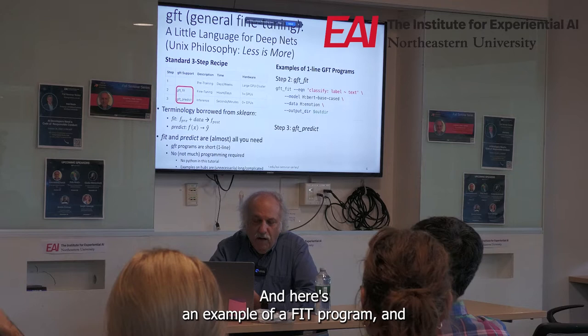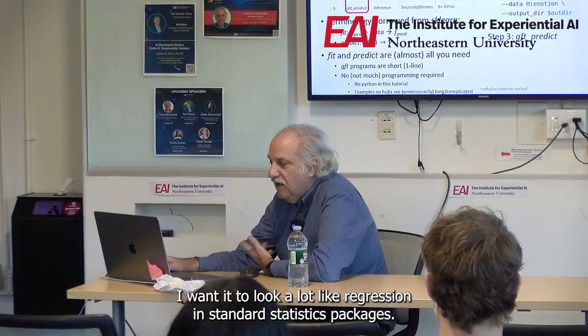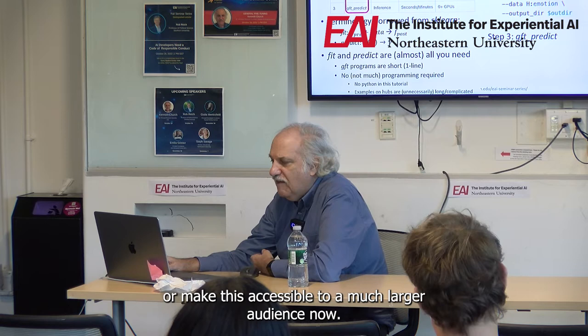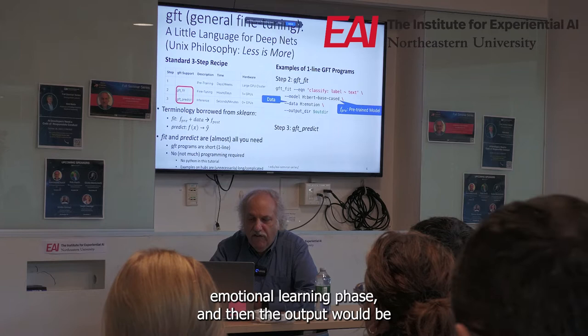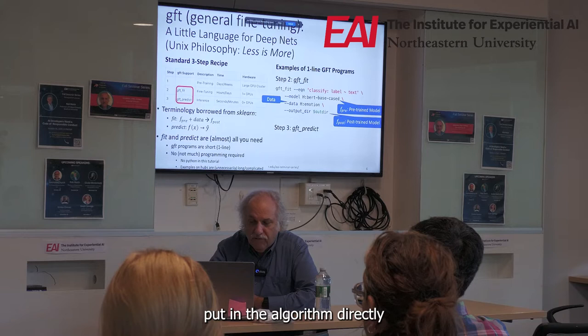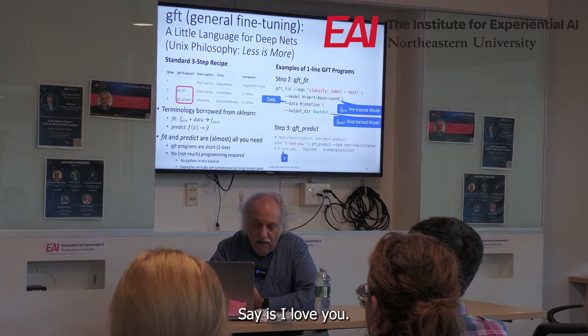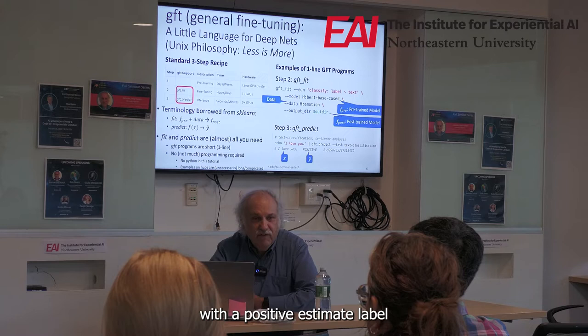Here's an example of a fit program, and I want it to look a lot like regression in standard statistics packages. You shouldn't really need to know how to code anything to use this — I want to make this accessible to a much larger audience. There's the pre-trained model — a BERT model. The data would be a standard dataset called emotion on Hugging Face, and the output would be put in the output directory. For predict, I start with an input, say x is 'I love you.' I throw it into this model and it comes out with a positive estimated label with a pretty high score.